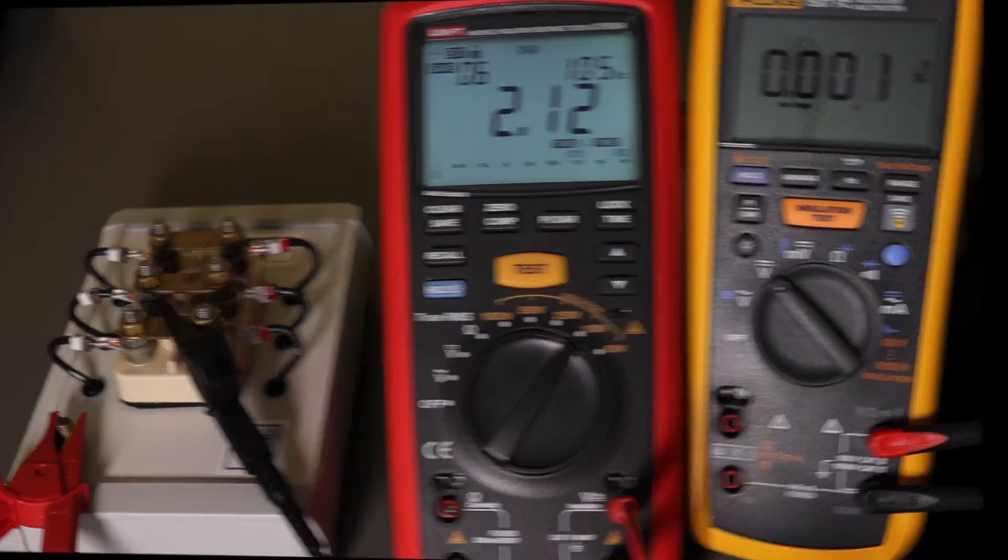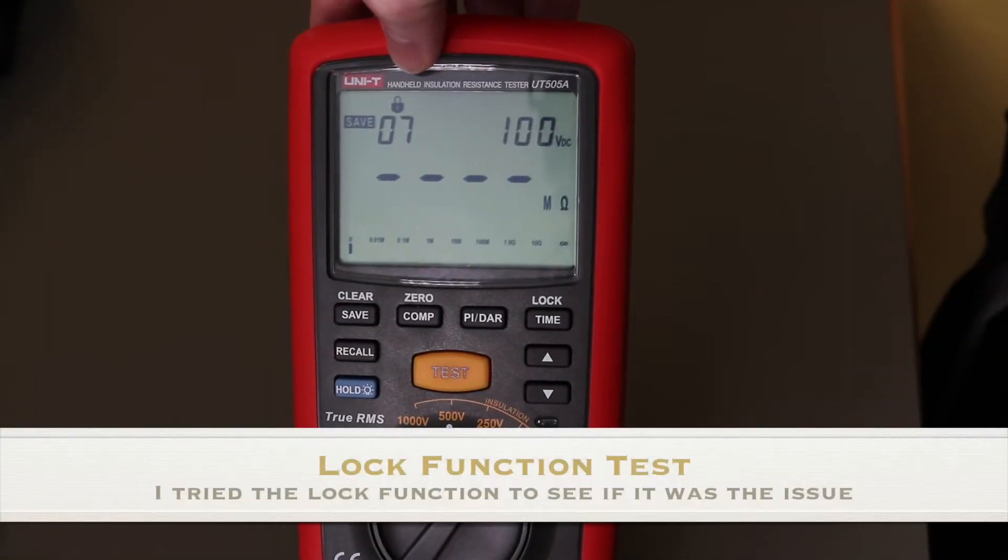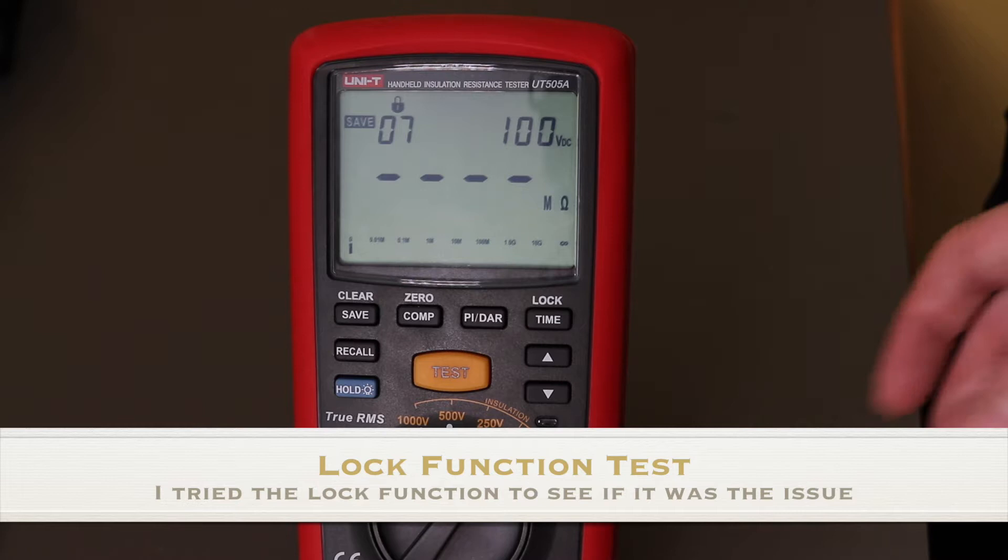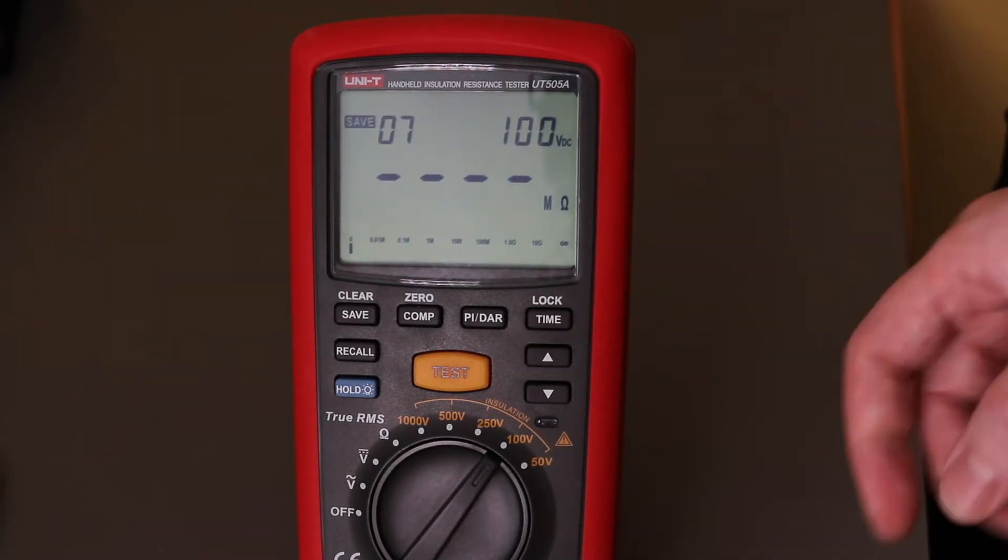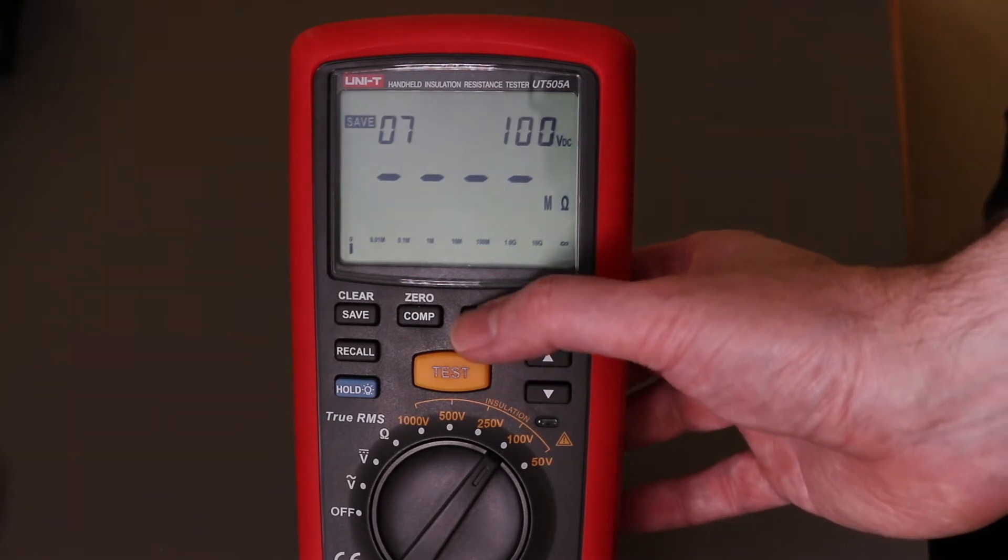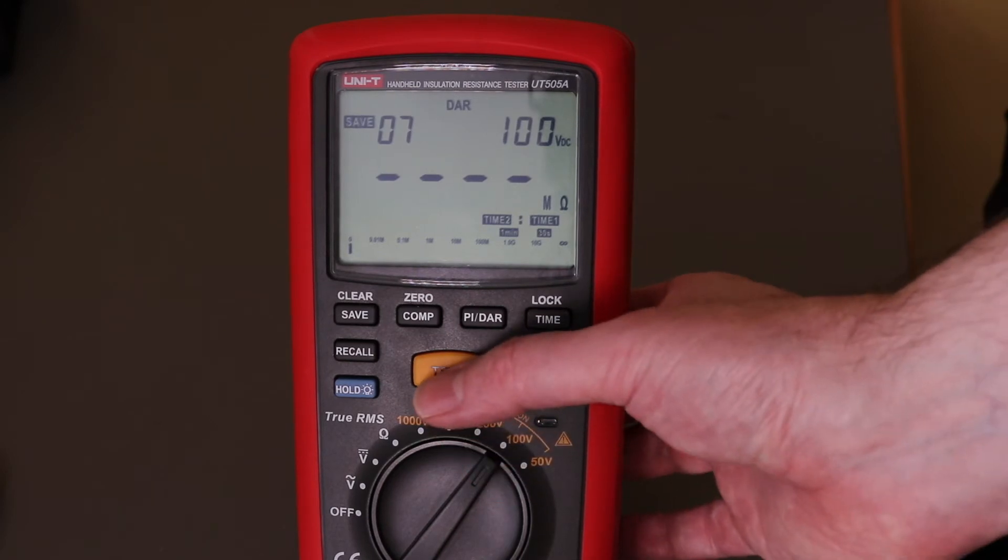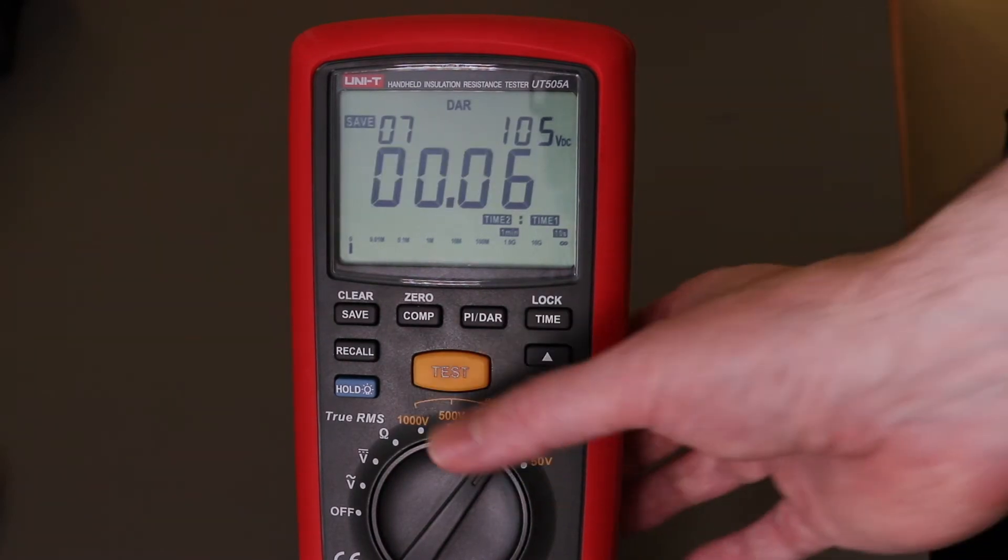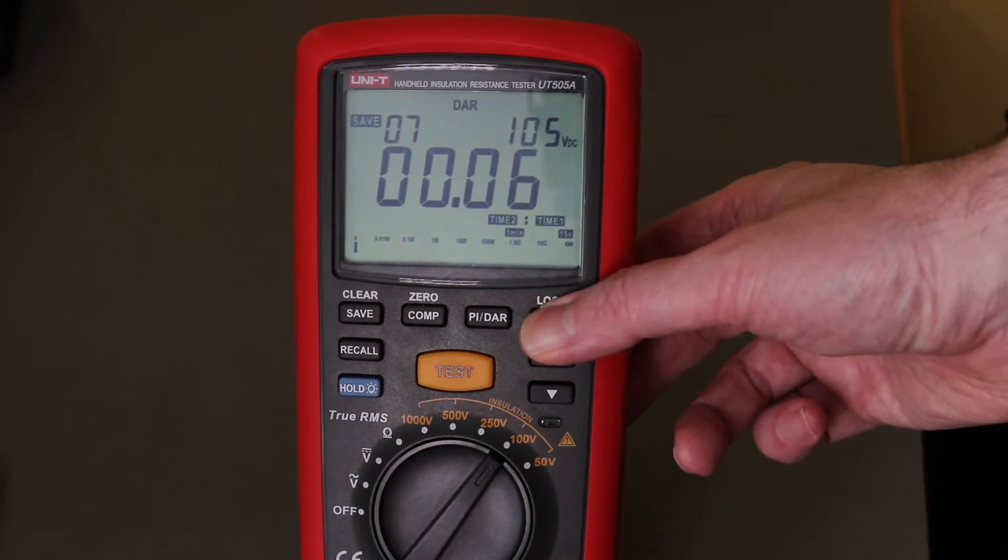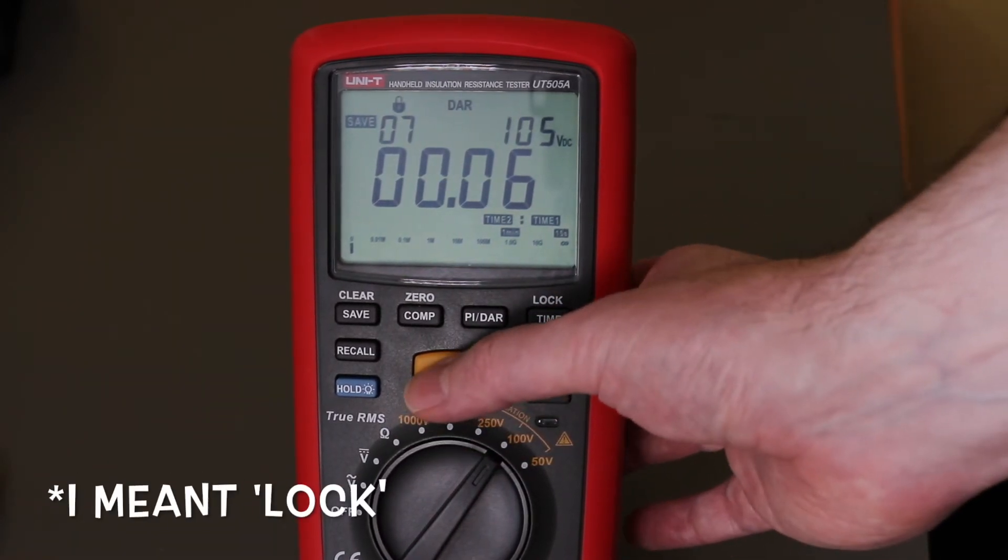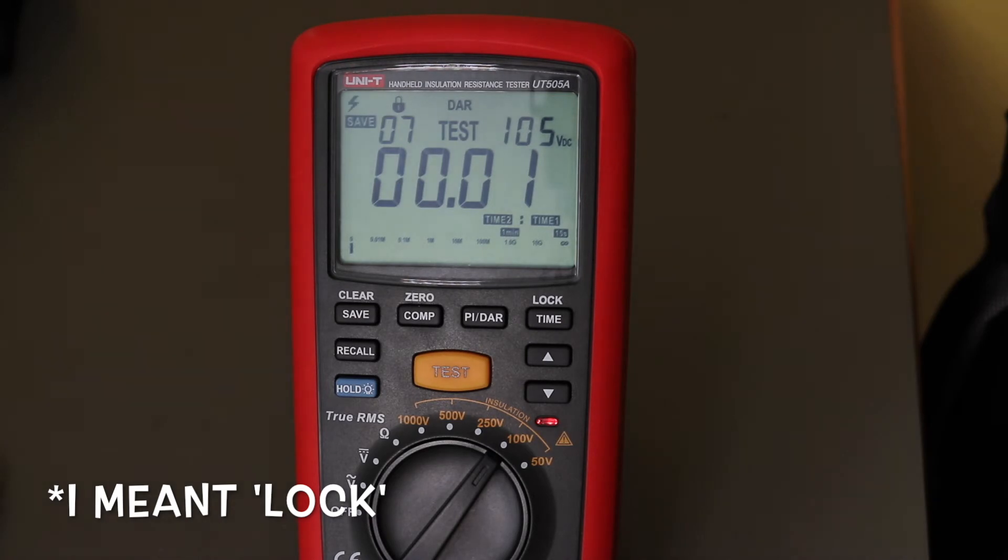So here's a little padlock up here at the top that shows that it's locked. If you hold time key in, you can get rid of that. And then when you do a PI or a DAR test, it doesn't like it and it won't actually test.